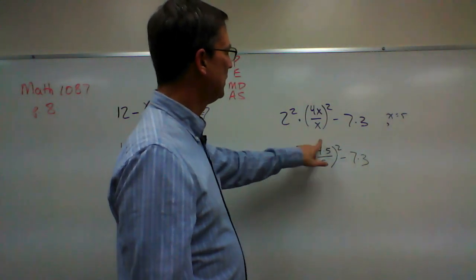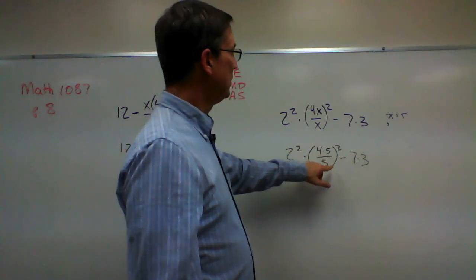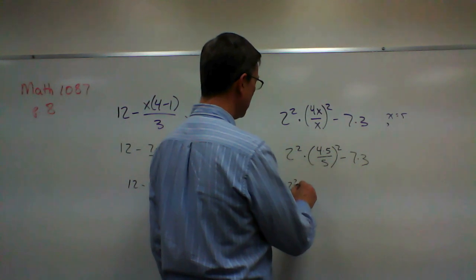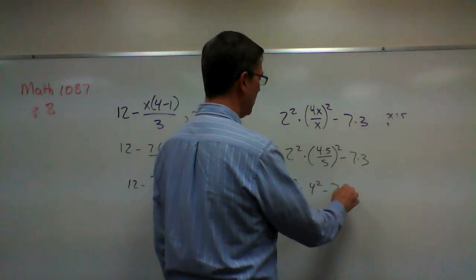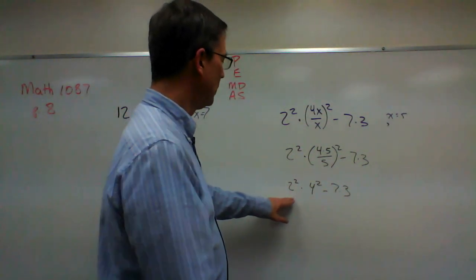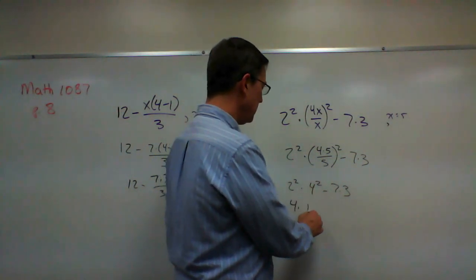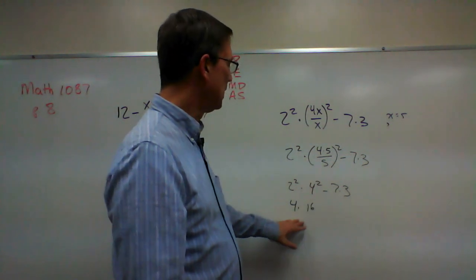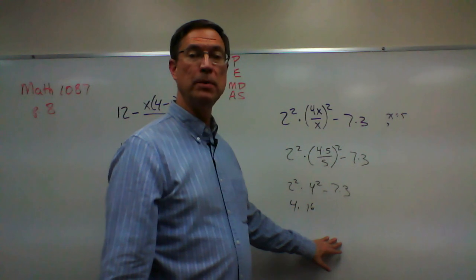So in this parentheses I have 4 times 5 which is 20. 20 divided by 5 is 4. So this whole thing now becomes 2 squared times 4 squared minus 7 times 3. All right, and so now we can do 2 squared is 4, 4 squared is 16, minus, and you know what 7 times 3 is. And then it's just a matter of finishing this multiplying and your last step is subtraction.